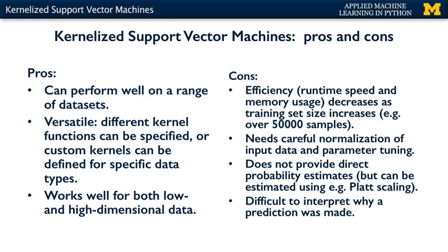As we saw when applying a support vector machine to a real-world dataset, using an SVM requires careful normalization of the input data as well as parameter tuning. The inputs should be normalized so that all features have comparable units and are on similar scales. Support vector machines also don't provide direct probability estimates for predictions, which are needed for some applications. There are ways to estimate these probabilities using techniques such as Platt scaling, which transforms the output of the classifier to a probability distribution over classes by fitting a logistic regression model to the classifier scores. Finally, it can be difficult to interpret the internal model parameters of a support vector machine, which means the applicability of SVMs in scenarios where interpretation is important may be limited when we want to understand why a particular prediction was made.